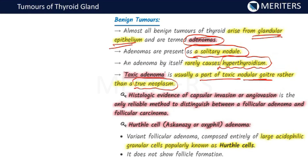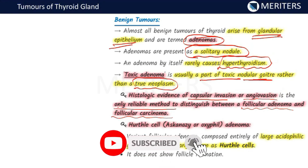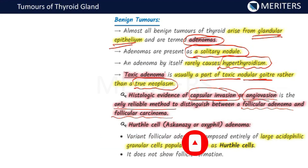Regarding histological evidence of benign tumors: the histological evidence of capsular invasion or angio-invasion is the only reliable method to distinguish between follicular adenoma and follicular carcinoma. In follicular carcinoma, you will find capsular invasion as well as angio-invasion. If it is absent, then it is follicular adenoma.